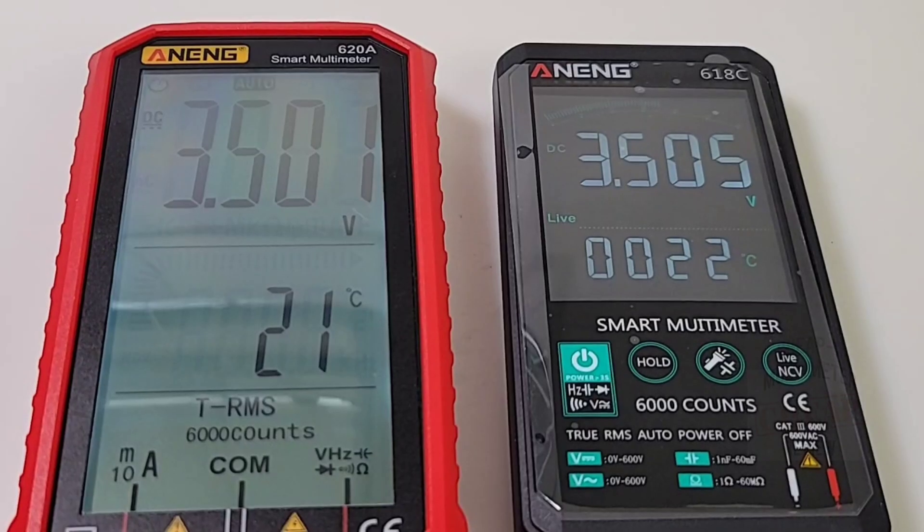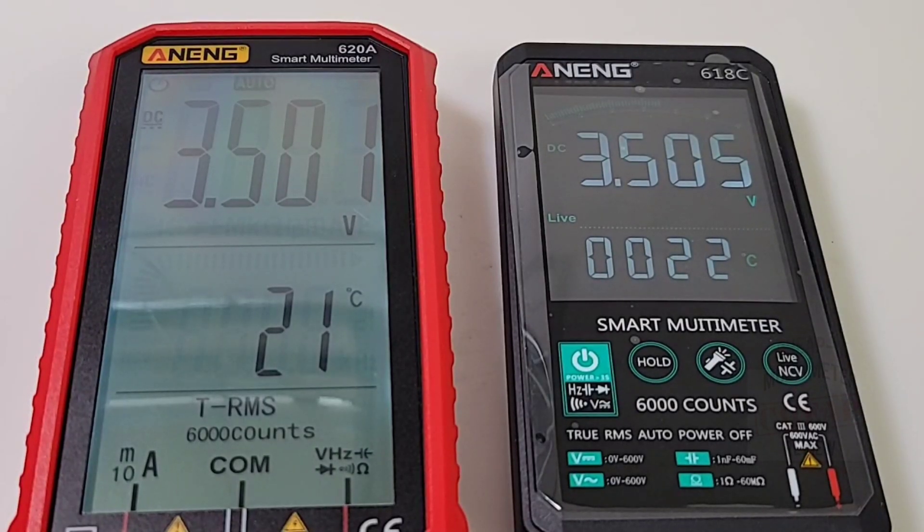DC voltage showdown. I've got the ANENG 618C on the right and on the far left the 620A. 3.5 volts is what we're sitting at, 3.501, 3.505. These are both 6000 count smart multimeters. Let's take it up, we're going to sit at 5 volts even steven, 5.005 for the 620, 5.009, 5.010 for the 618, close enough. Up and away, 7.60 volts according to the DC power supply, 7.60 spot on for the 620, 7.61 for the 618.